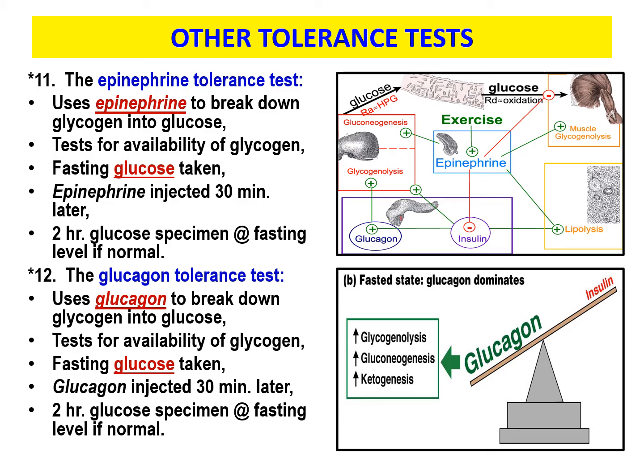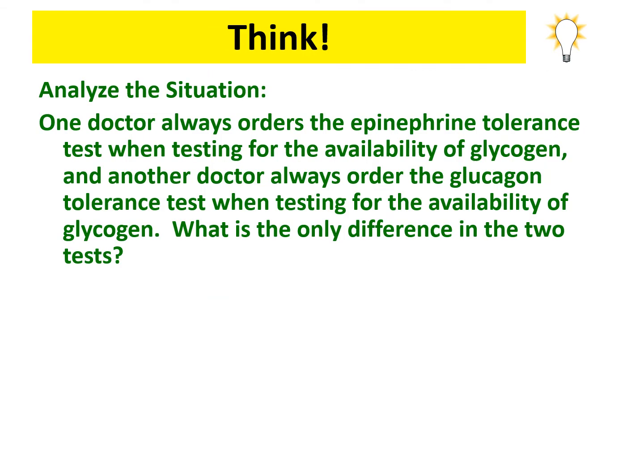The glucagon tolerance test uses glucagon to break down glycogen into glucose — also testing for the availability of glycogen. A fasting glucose is taken, then glucagon is injected 30 minutes later instead of epinephrine. Two hours later, another glucose sample is drawn, and if it's at fasting level, the patient is normal. Pause the thinking slide, read through it, and make sure you're getting the right answer. You can always reach out — call, text, email, or talk in lab.